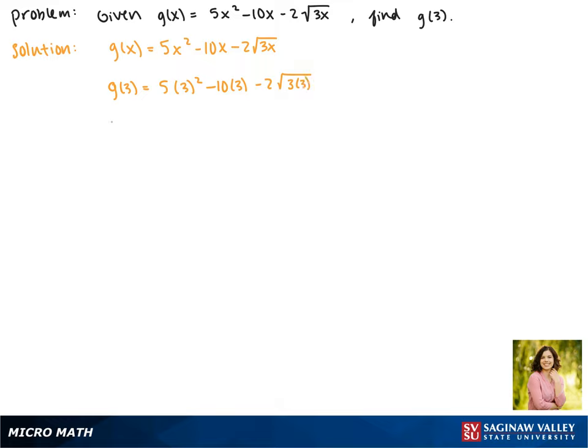Now we can evaluate this. So first, 3 squared is 9, so this becomes 5 times 9.